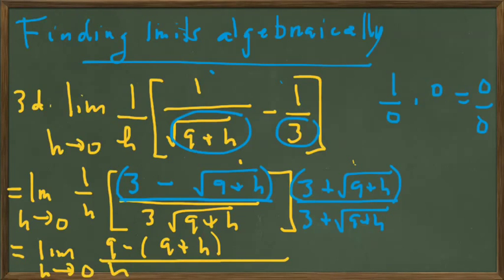And our denominator is a little complex at this point. It is h times 3 times square root of 9 plus h times the factor 3 plus the square root of 9 plus h.